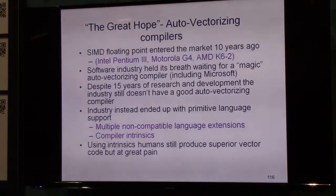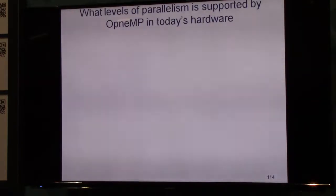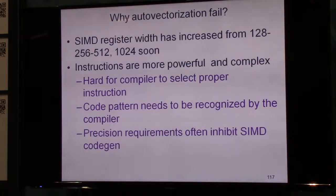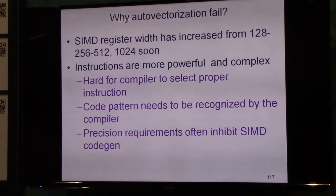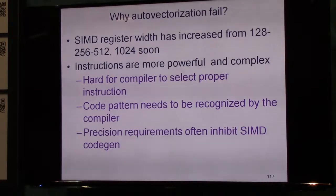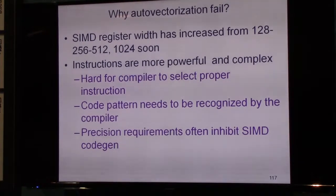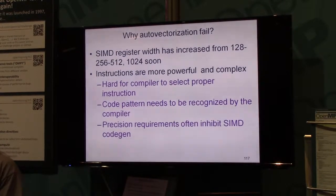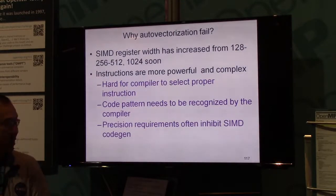So what's the problem with SIMD language extensions? It seems pretty clear that SIMD registers have been steadily increasing — in fact, they're verging on 1024 fairly soon. The instructions are getting certainly more powerful and more complex. It's becoming much more difficult for the compiler to select the right instructions, and the code patterns that have to be recognized by the compiler are increasingly becoming more difficult. The precision requirements often essentially inhibit SIMD code generation.